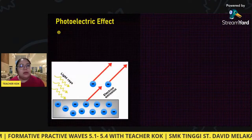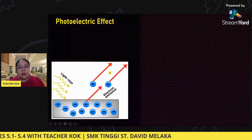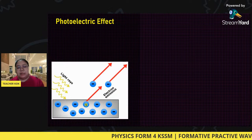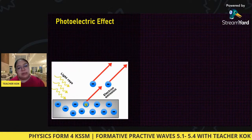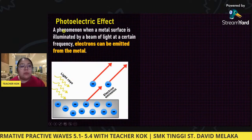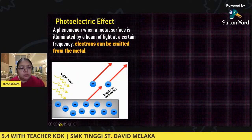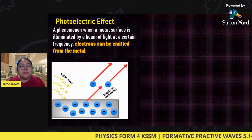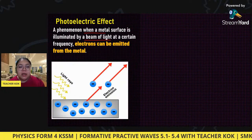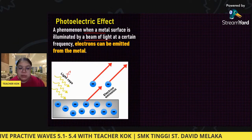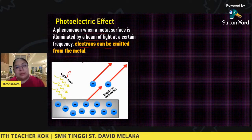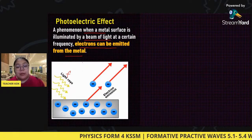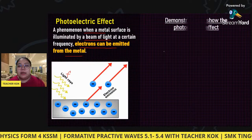The first part is definitions. For the photoelectric effect, you can see in the diagram — it's just like light strikes the metal, and then the electron comes out. Now, the key words to explain it: it's a phenomena when the metal surface is illuminated by a beam of light at a certain frequency, so the electron can be emitted from the metal. Not every light ray causes electrons to come out — they must have a certain frequency.